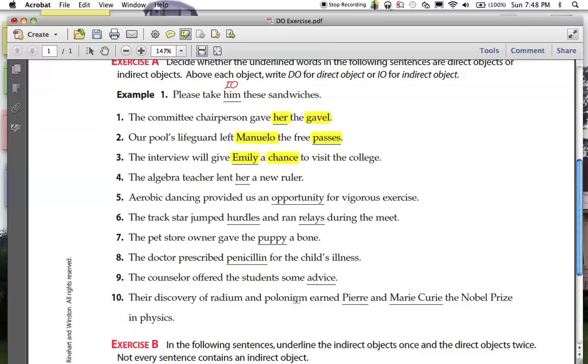The algebra teacher lent her a new ruler. Her here is an indirect object. Why? What did the algebra teacher lend the ruler? Direct object. Who did he lend the ruler to? Her.